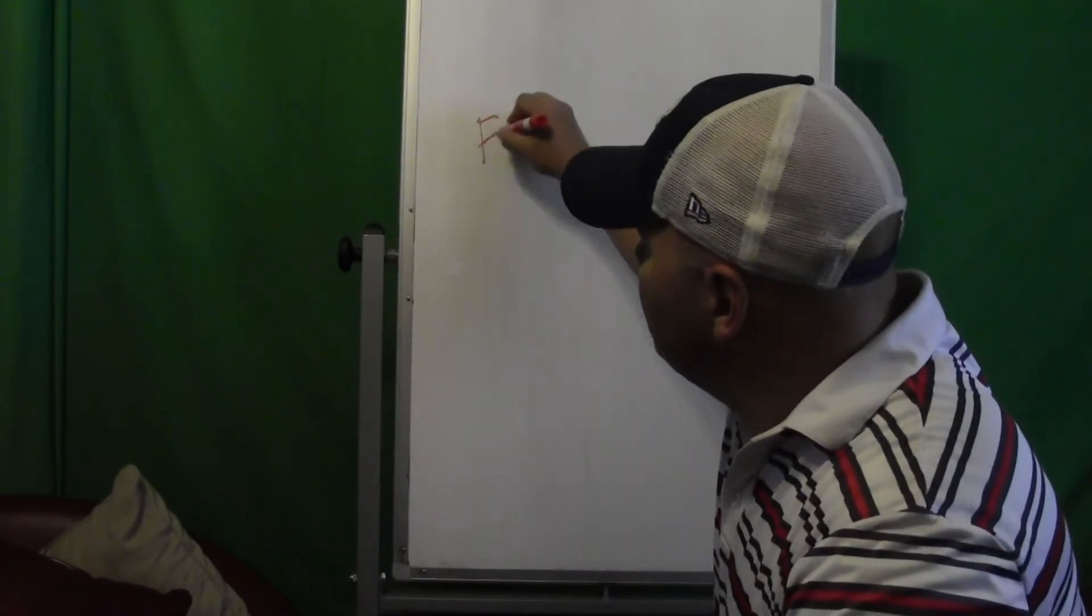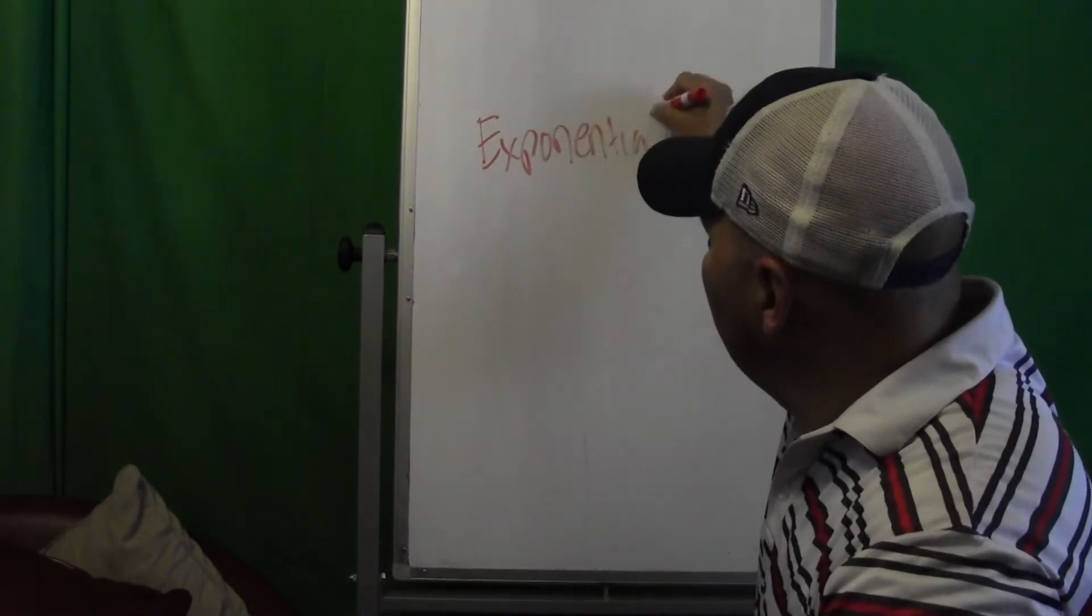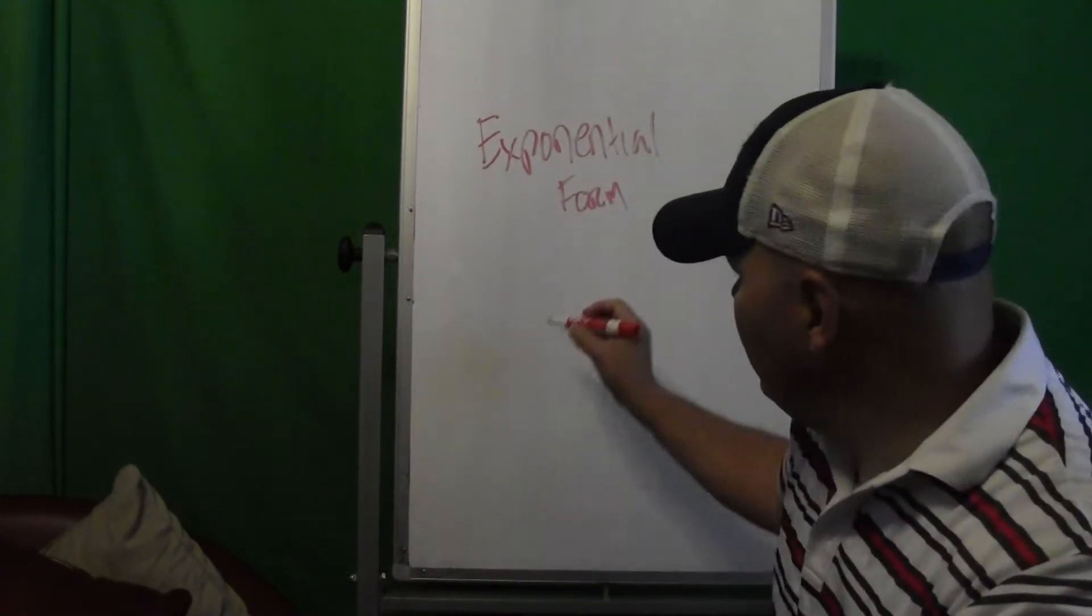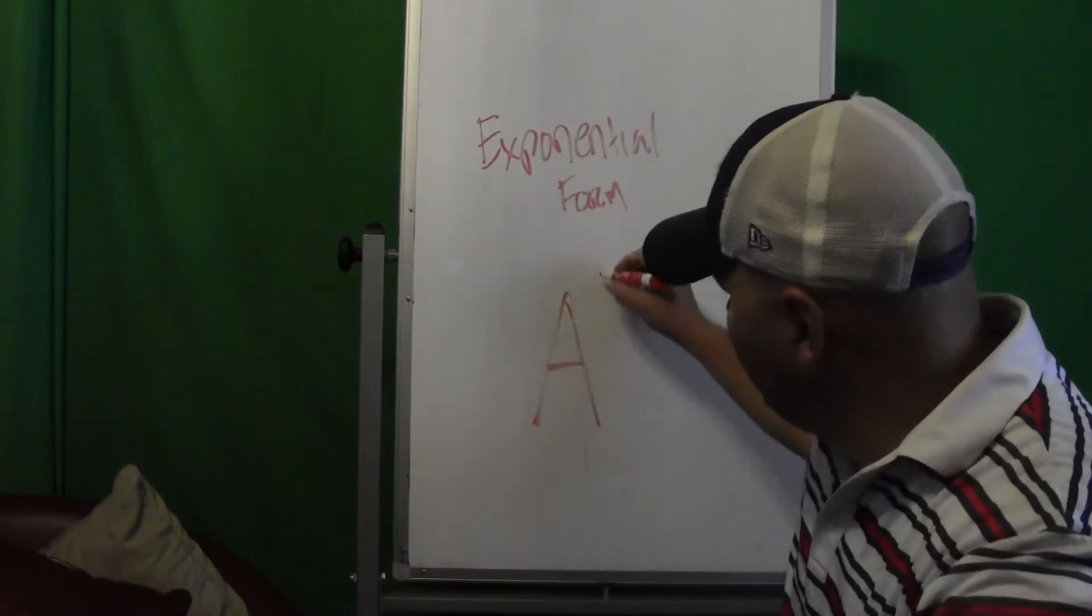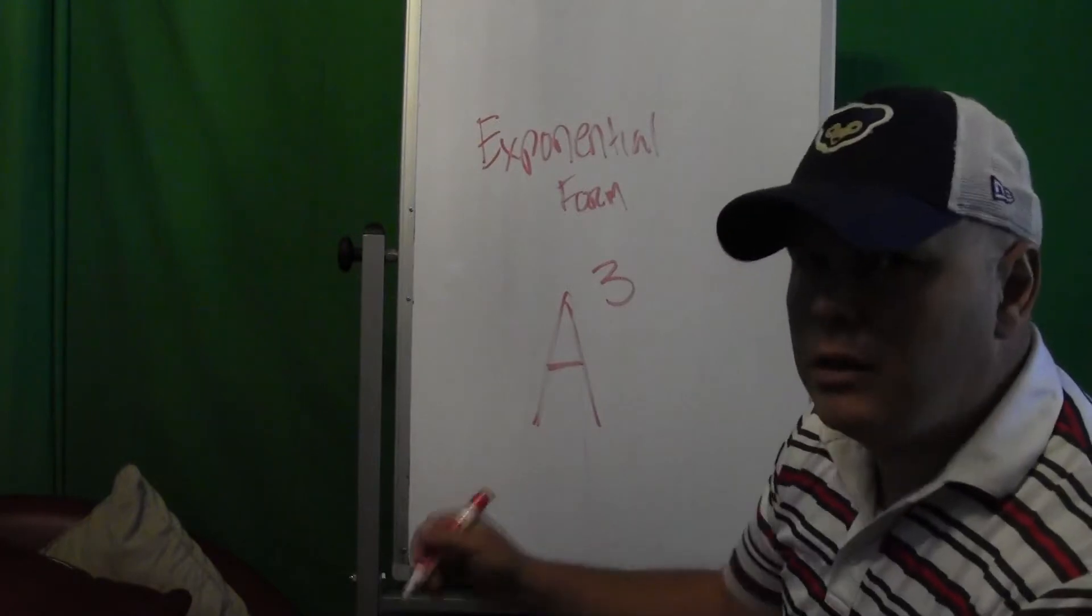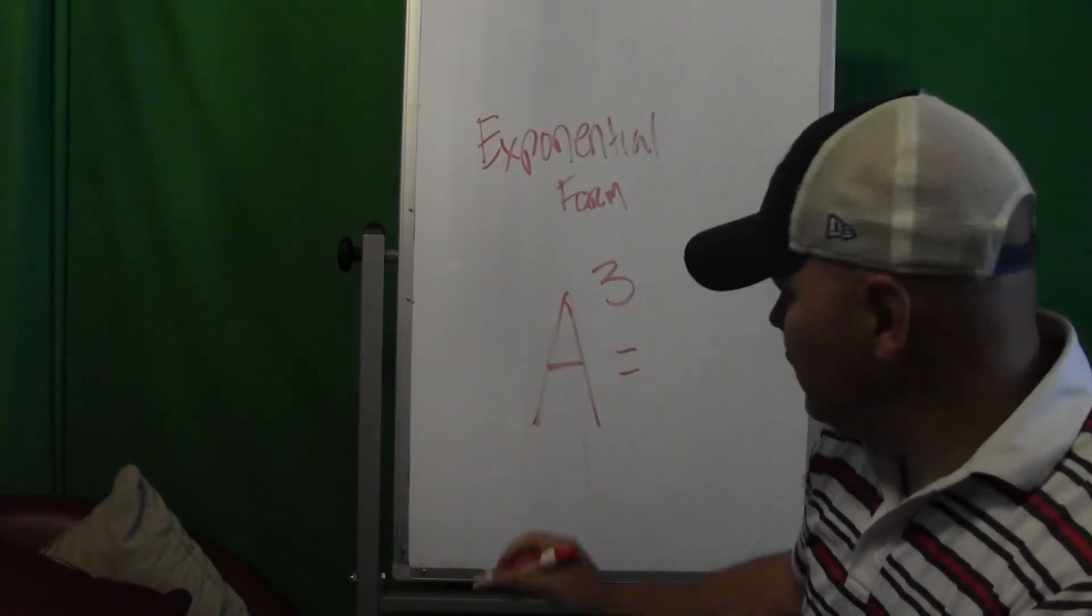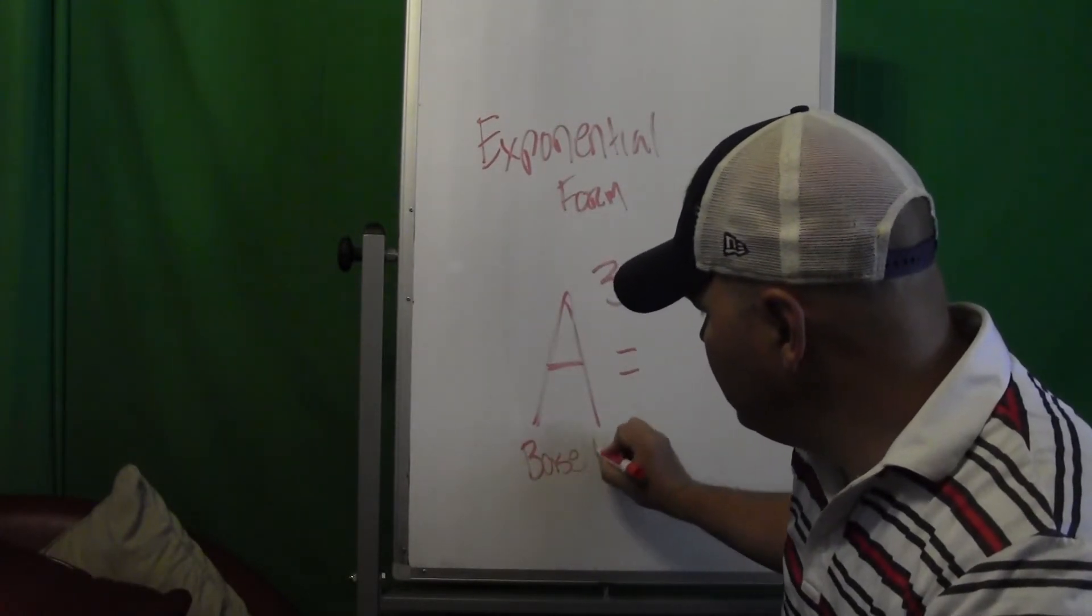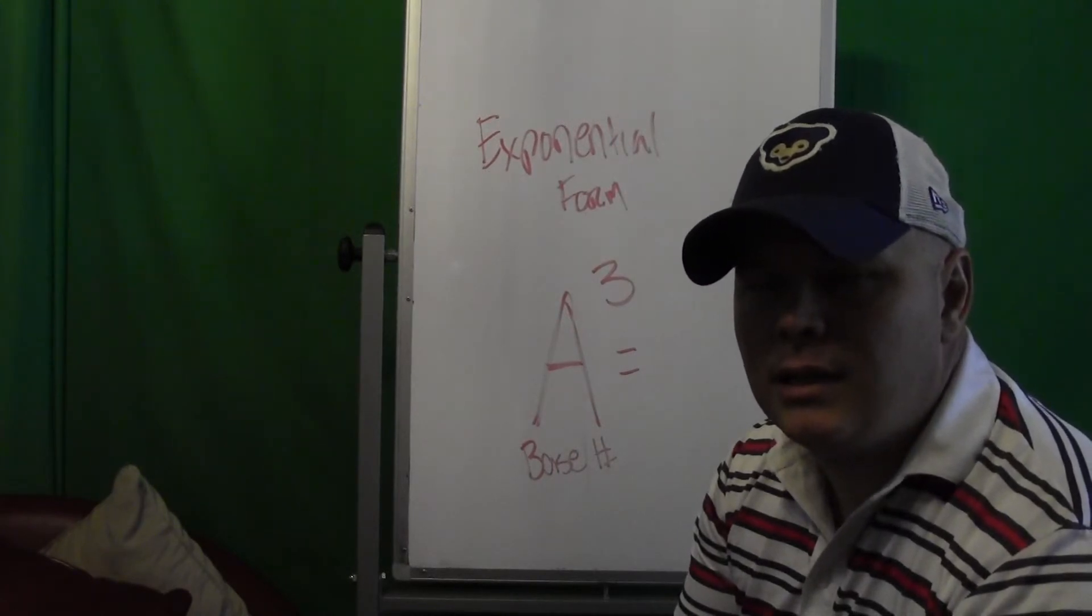So to understand what we're doing, first we need to know what exponential form is. All that is is when we have some number being raised to some exponent. So in this case we'd have a to the third. The key thing is to understand what this is - this is my base number. It doesn't have to be a number, it's anything that's being raised to an exponent. We call that the base number.